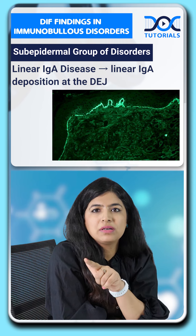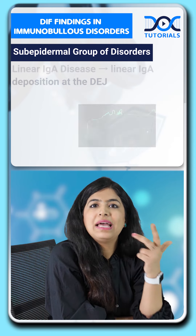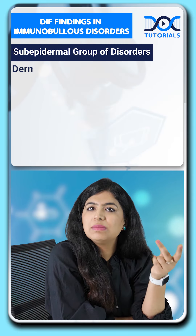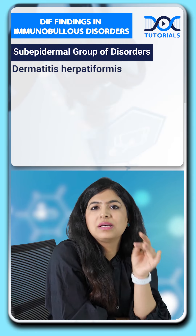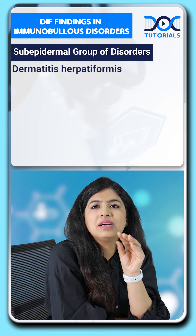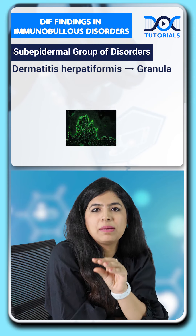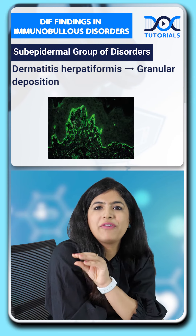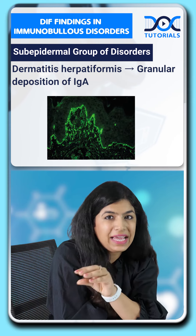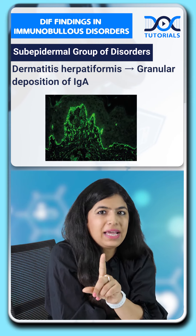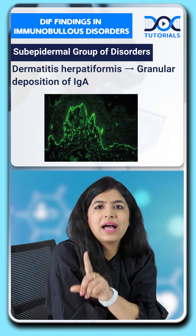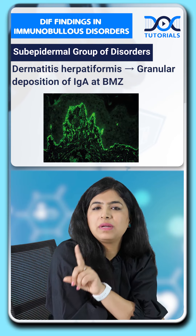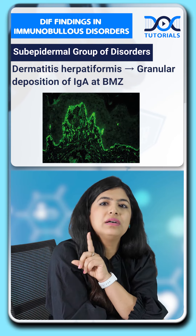In dermatitis herpetiformis, we get a granular deposition of IgA at the basement membrane zone — please remember: IgA granular at the basement membrane zone. So these are the important DIF findings which you should remember.